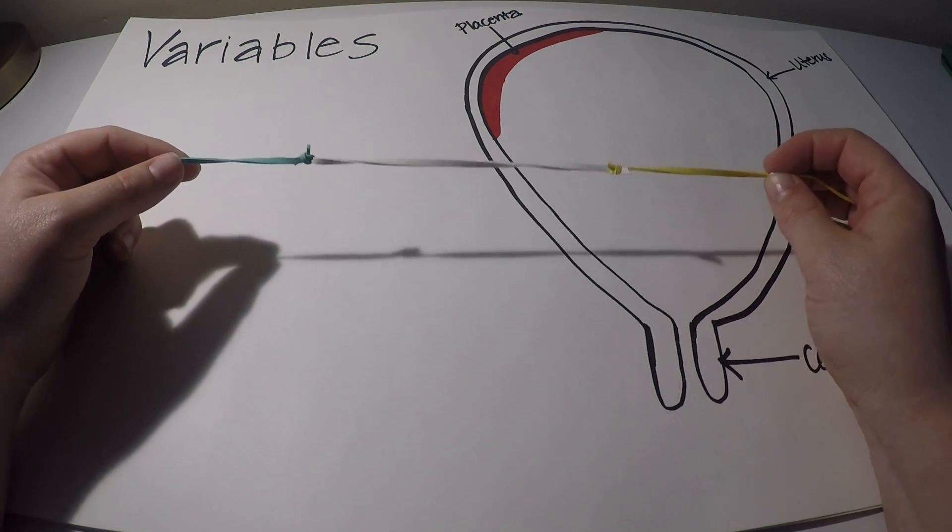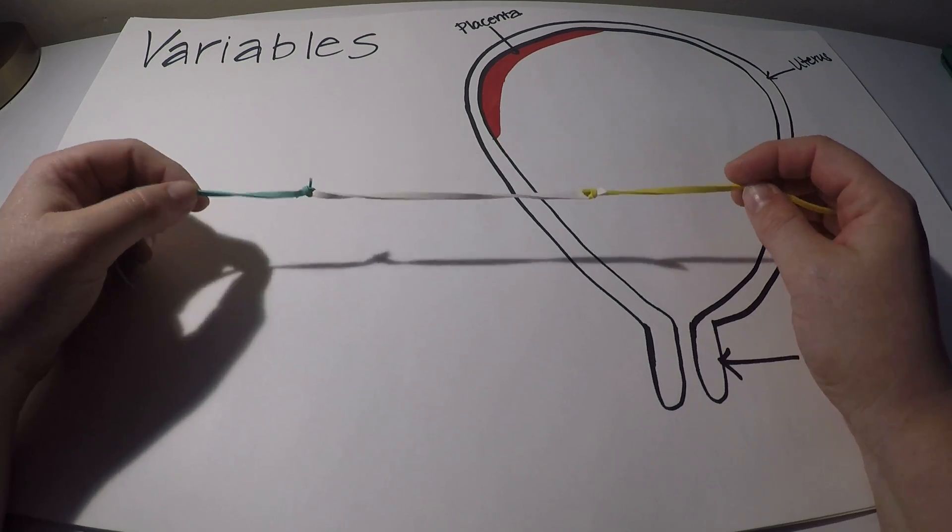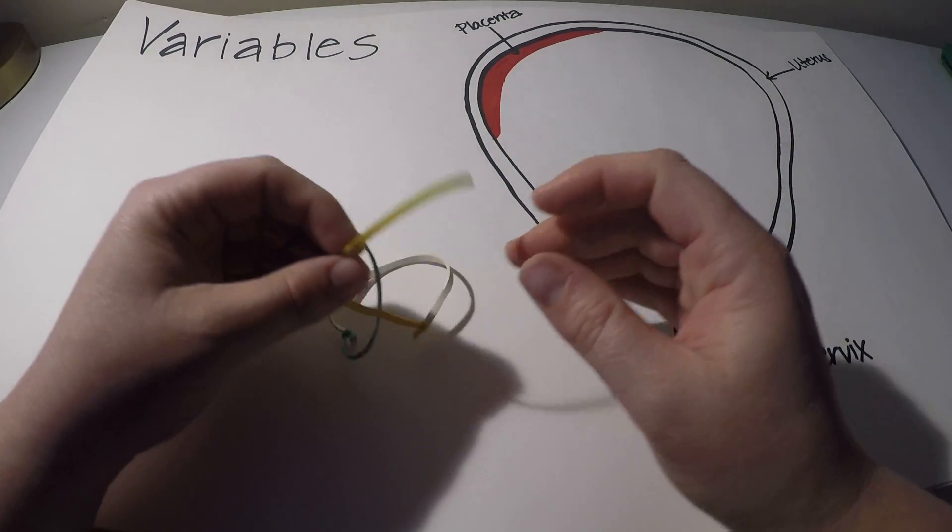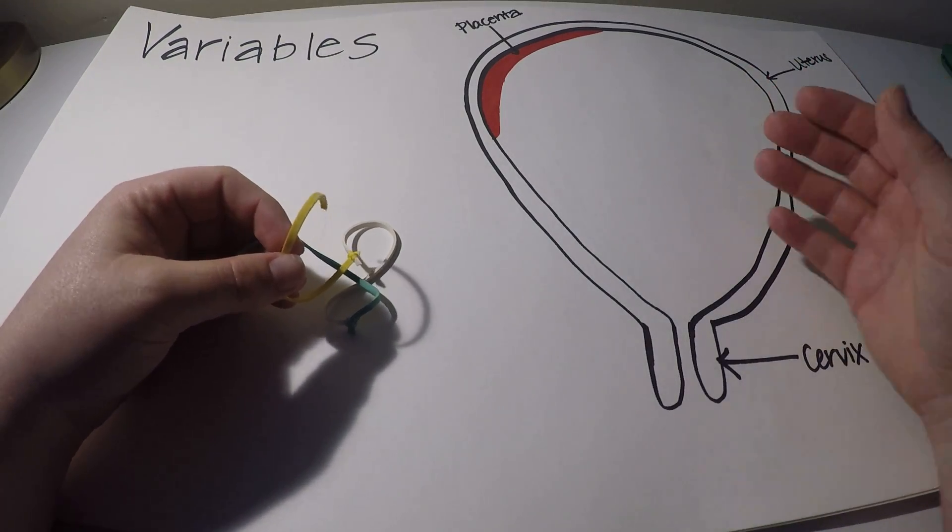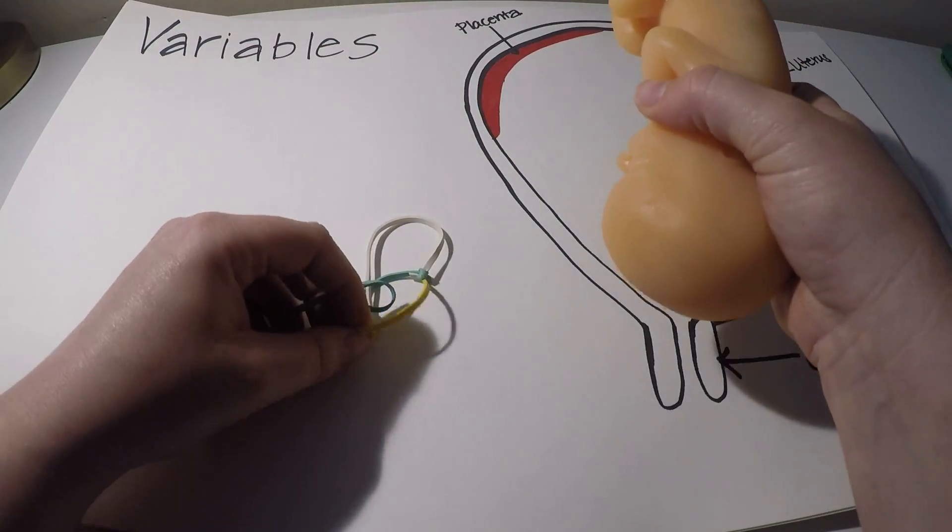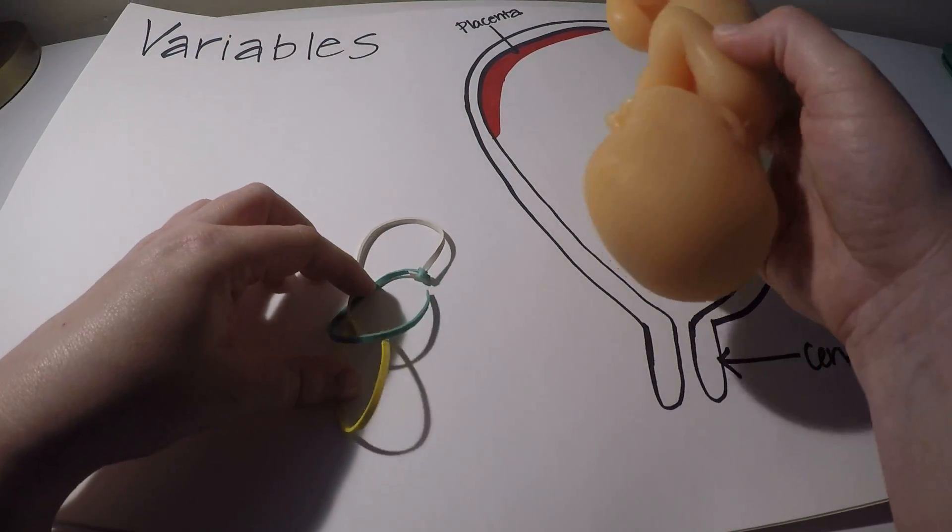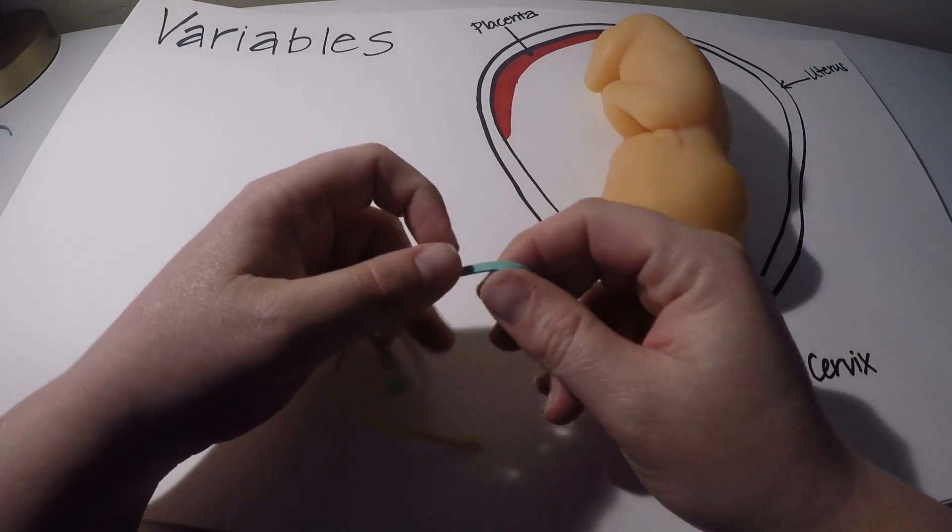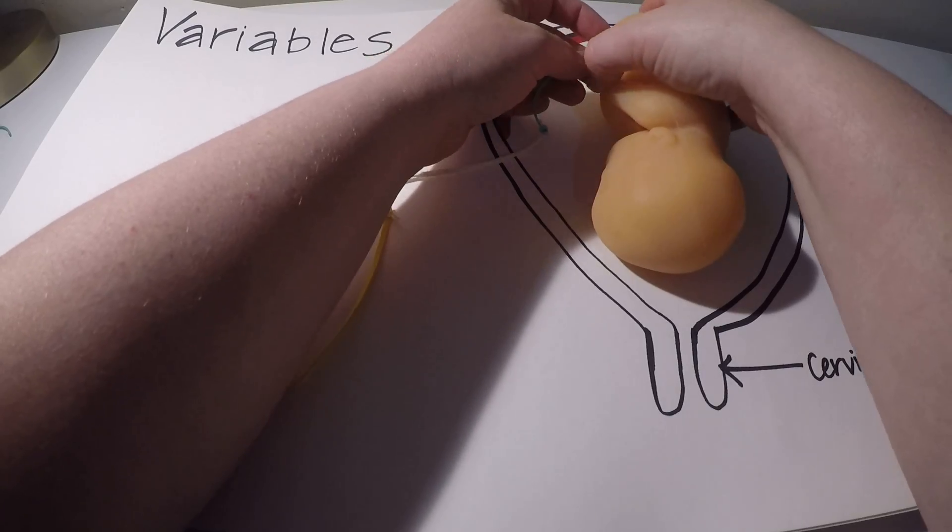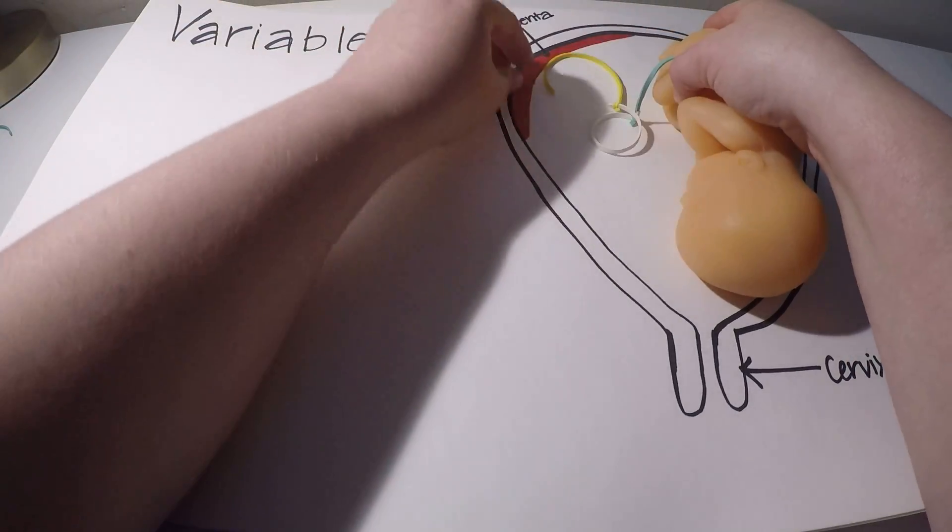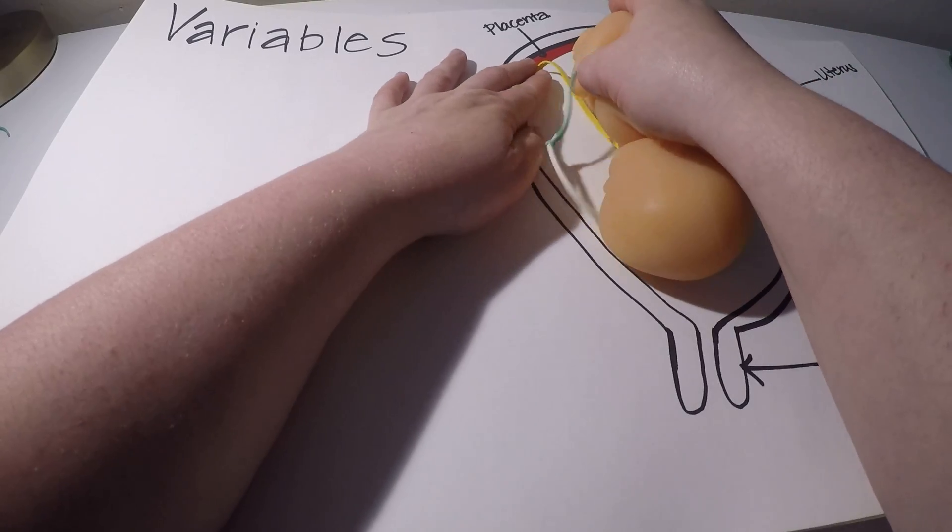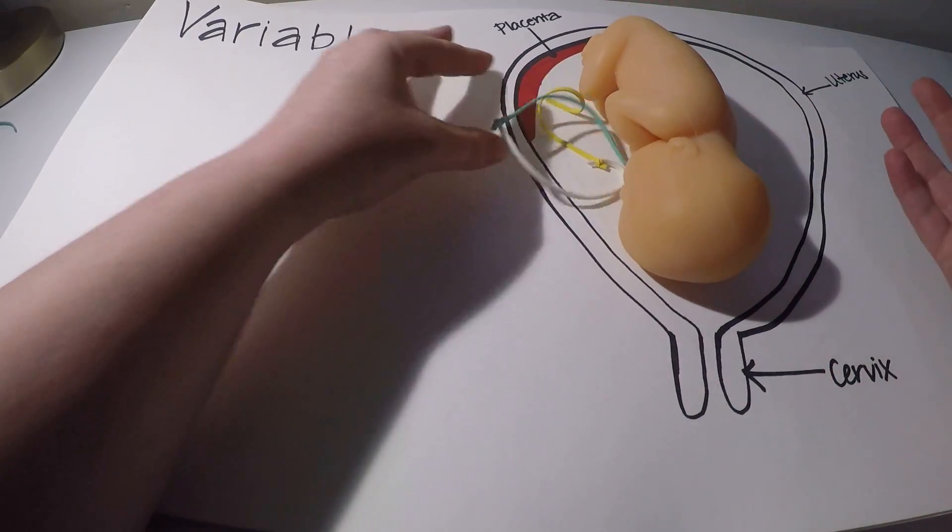So anytime that the umbilical cord is compressed, you can see a variable deceleration. There can be many, many things that cause this. It can just be positional. So I've got a baby here that I'm going to kind of use for demonstration. So if baby's laying here in the uterus, sometimes the cord attaches at the umbilicus and is attached to the placenta, but it's kind of floating around in there. So sometimes baby just ends up laying on it. If that's the case, that's a pretty easy fix.